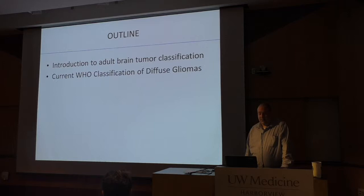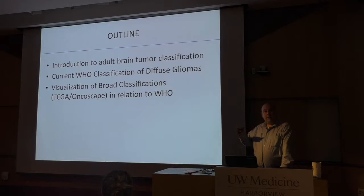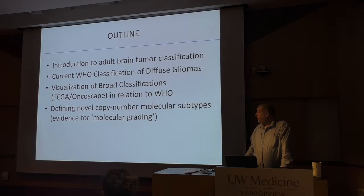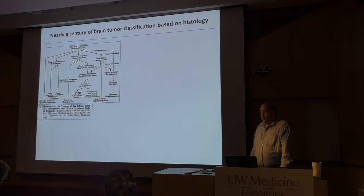The outline: a brief introduction to adult brain tumor classification and its history, the current WHO classification of diffuse gliomas, and then a transition to what I've been working on with Eric in the department of microsurgery at the Fred Hutch — looking at visualization of molecular data, big data sets, how we can use TCGA data sets to leverage understanding and refinement of diffuse glioma classification beyond what the WHO already recommends, and how we defined novel copy number alteration molecular subtypes and their clinical implications.